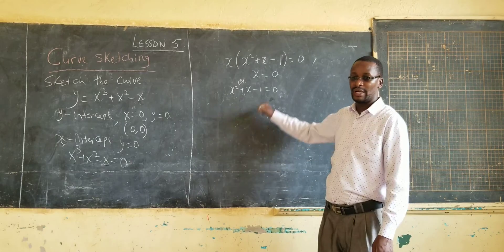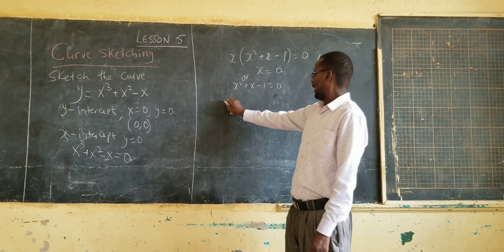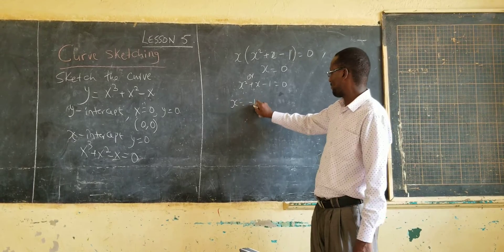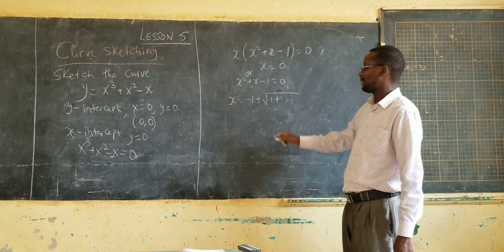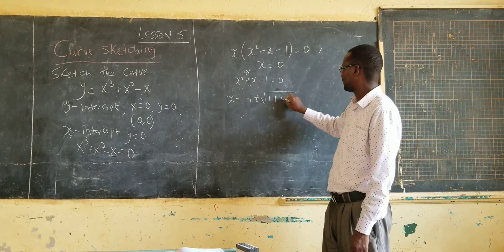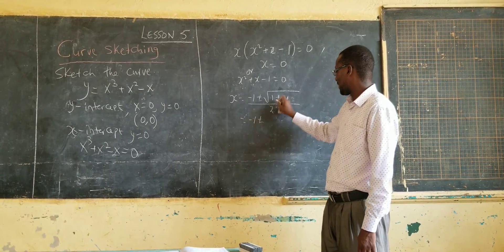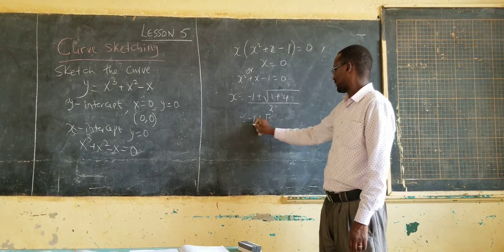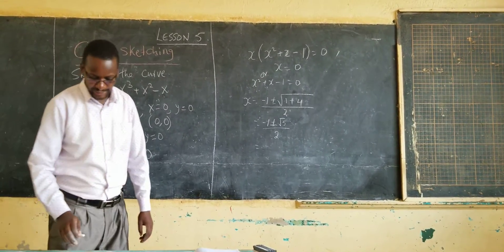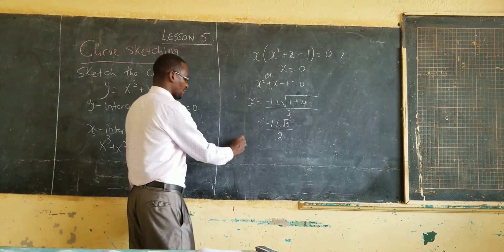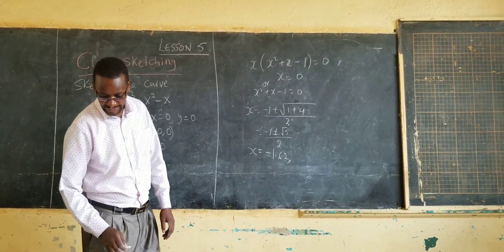This is a quadratic equation which we solve using the quadratic formula. The value of x is given by x = (−1 ± √(1 + 4)) / 2, since 4ac = 4 × 1 × (−1) = −4, giving √5. So x = (−1 ± √5) / 2. This gives two values: x ≈ −1.62 and x ≈ 0.62.